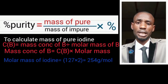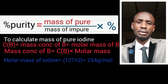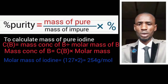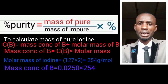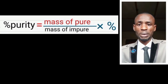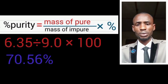Also note that iodine is a diatomic molecule, so to get the molar mass of iodine you need to multiply by 2. In the question, we were given the mass of impure iodine as 9.0 grams. So the percentage purity = (mass of pure iodine ÷ 9) × 100. You must include the percentage sign. We have now calculated the percentage purity of iodine in the solution.